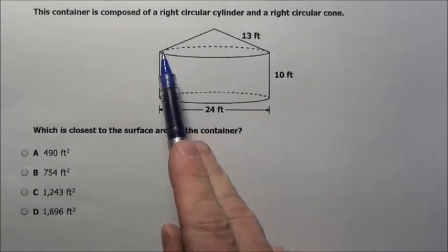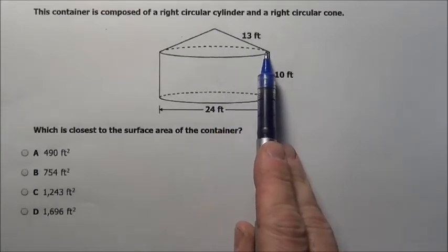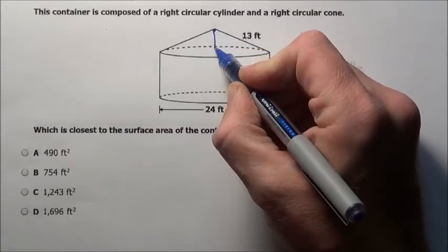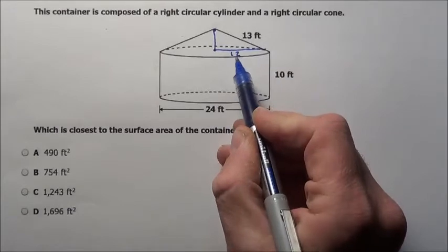The cone is on top right here, has a slant height of 13 coming down. We don't know what it is from here to the base. We do know from here over, radius is 12.